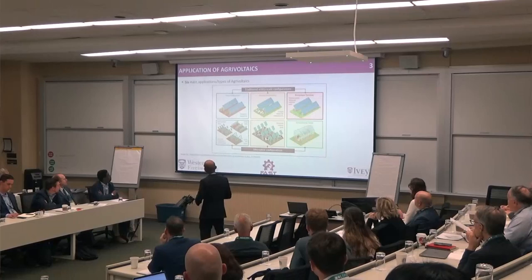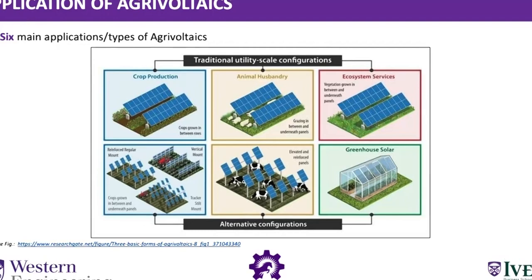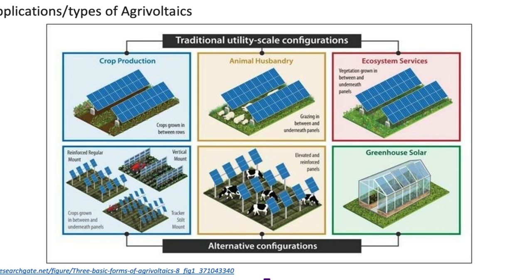Some of the application strategies that can be implemented through Agrivoltaics — these are the six main types or applications. We can generally have normal crop production in between the rows, where you space your solar panels such that you can have rows of crops in between them.